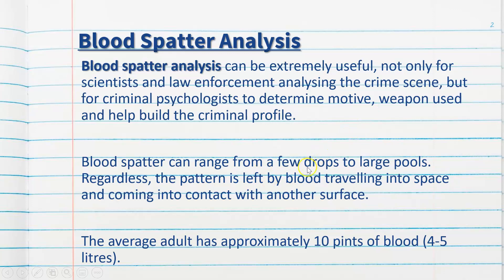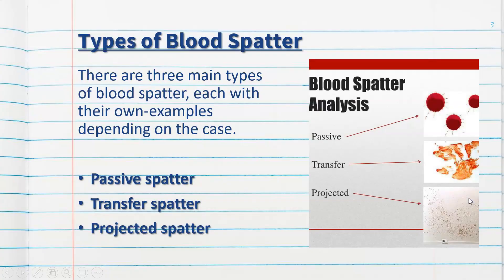Blood spatter can range from a few drops to large pools. Regardless, the pattern is left by blood travelling through space and coming into contact with another surface — that's what spatter is defined as. The average adult has approximately 10 pints of blood, which equates to 4 to 5 litres. There are three main types of blood spatter: passive spatter, transfer spatter, and projected spatter.